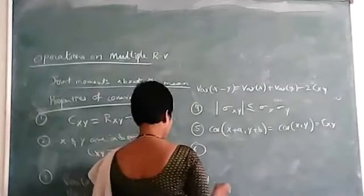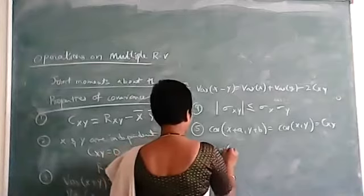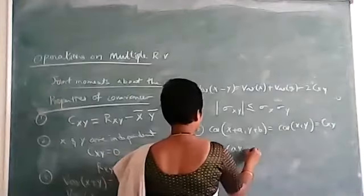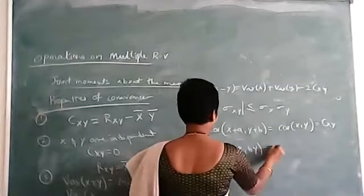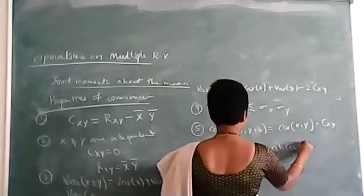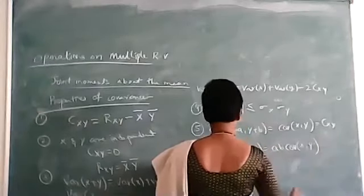And the sixth property is covariance of X comma aY equals a times covariance of X comma Y.